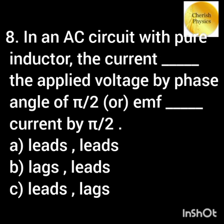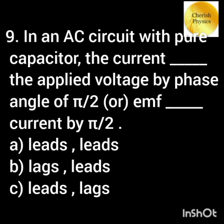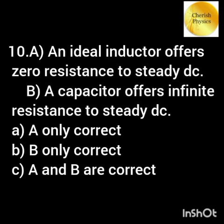In an AC circuit with a pure inductor, the current dash to the applied voltage by pi/2, or the EMF dash to the current by pi/2. In an AC circuit with a pure capacitor, the current dash to the applied voltage by pi/2, or the EMF dash to the current by pi/2. An ideal inductor offers zero resistance to steady DC; a capacitor offers infinite resistance to steady DC.